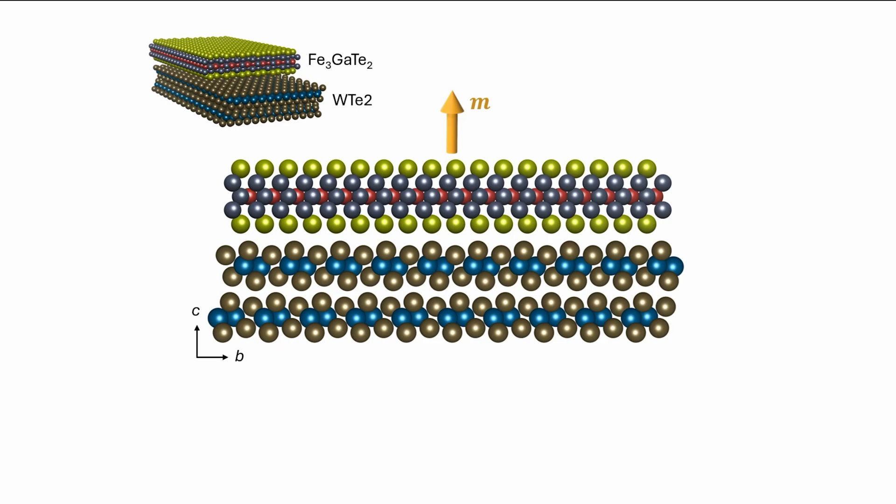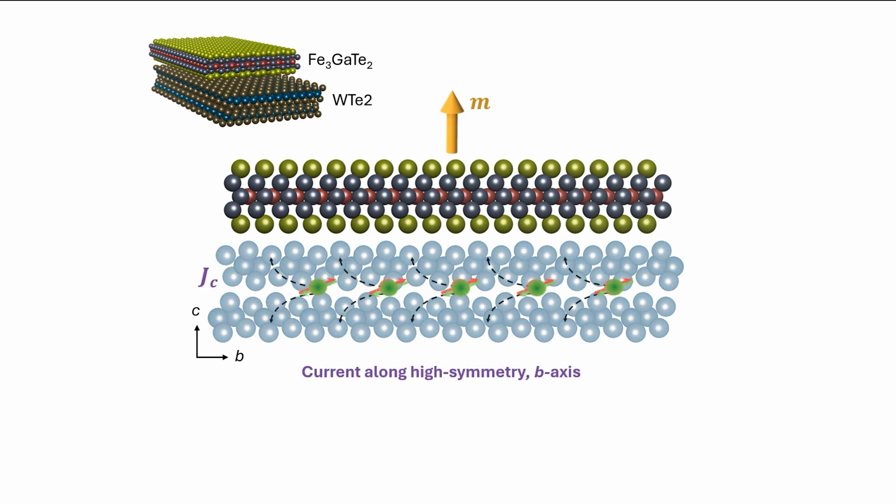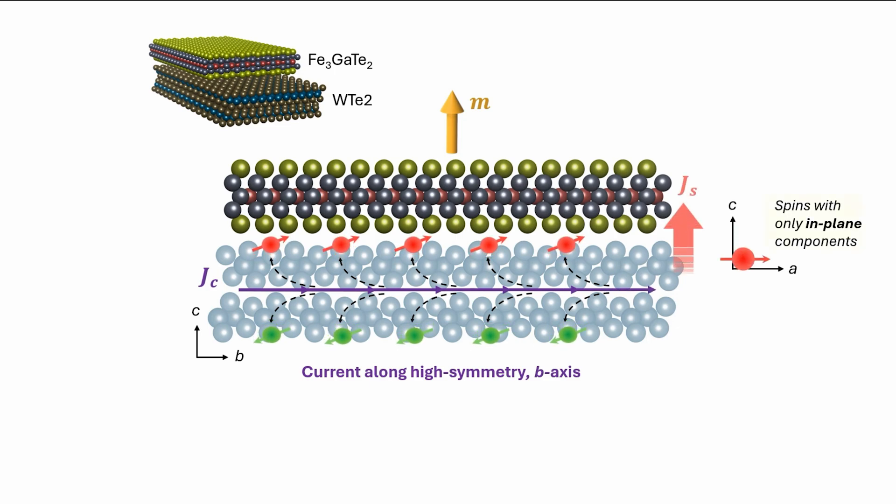Thus, when a current pulse is applied along the high symmetry B-axis of WTE2, the spin currents at the interface only has an in-plane spin component, which cannot produce deterministic switching of the out-of-plane magnet.